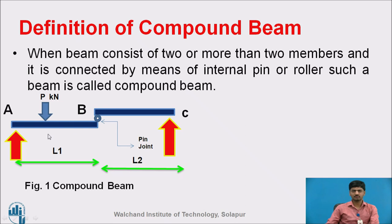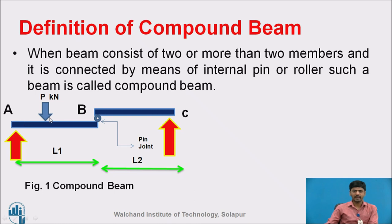If we consider two supports and only one member is present, we call that a simply supported beam. If one end is fixed and the other end has no support, we call that one end hinge and other end roller support. Now observe this particular figure — A, B, C are the nodal points. At A and C, simple support is there, and at B, two members are connected by using one internal pin or roller.